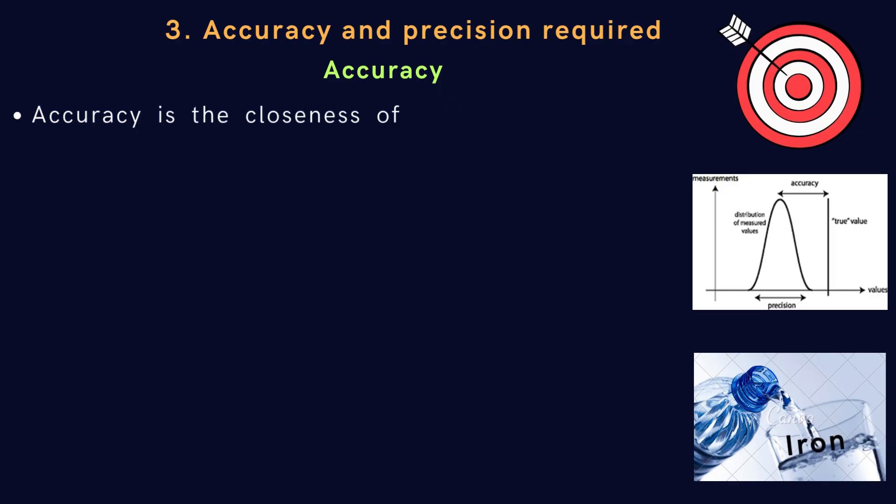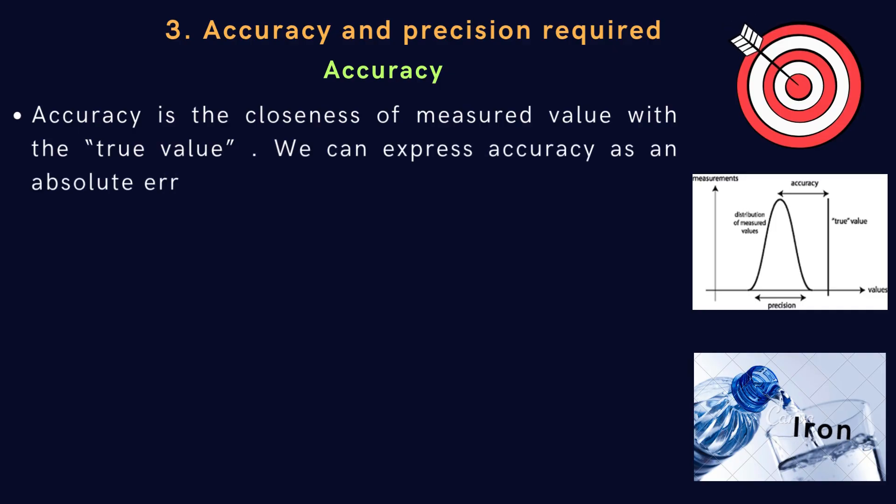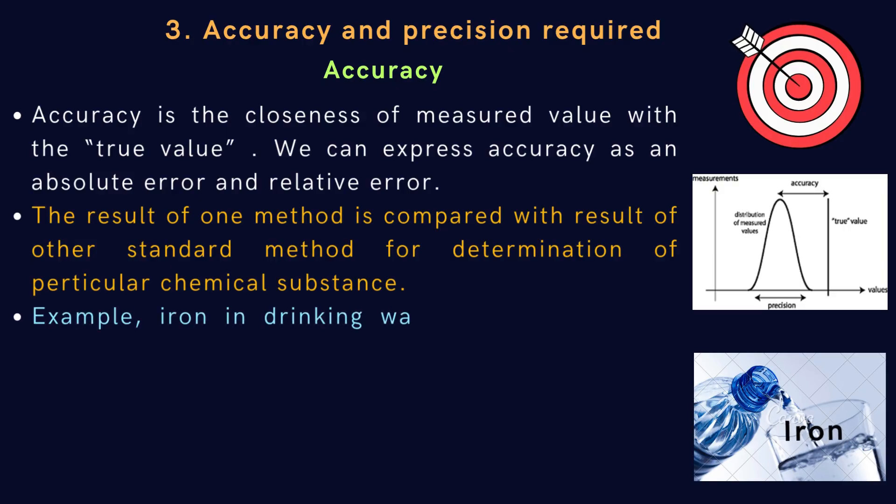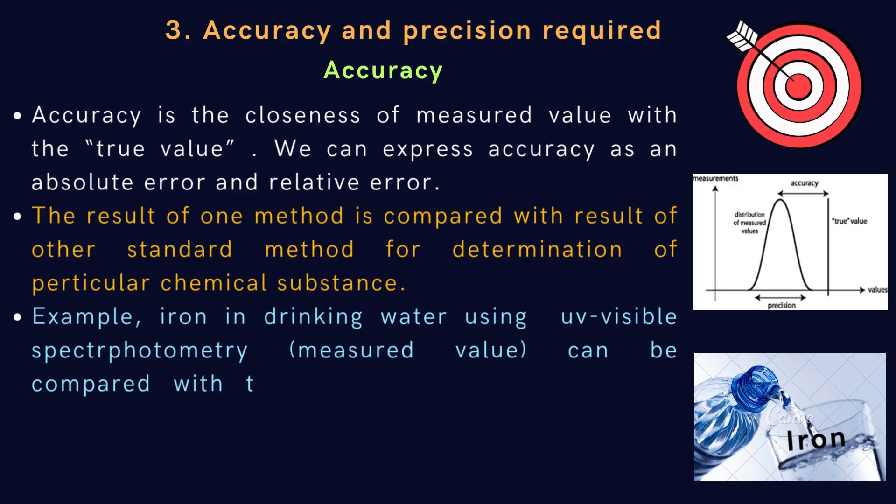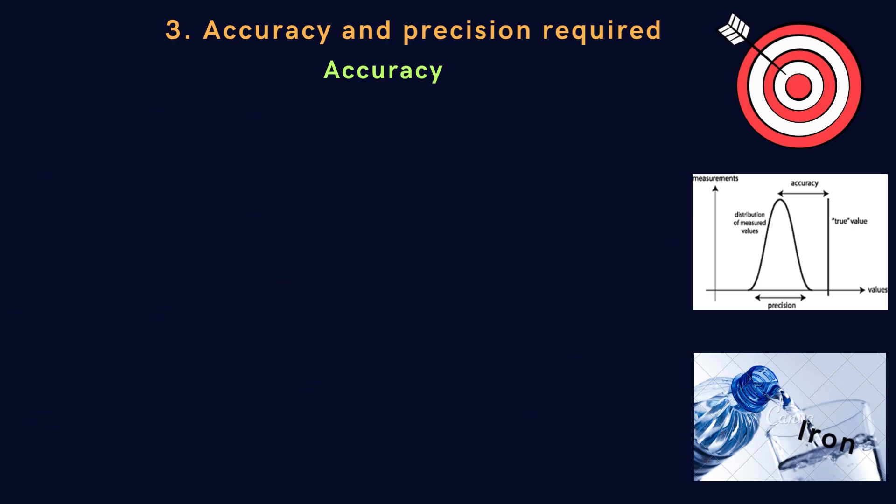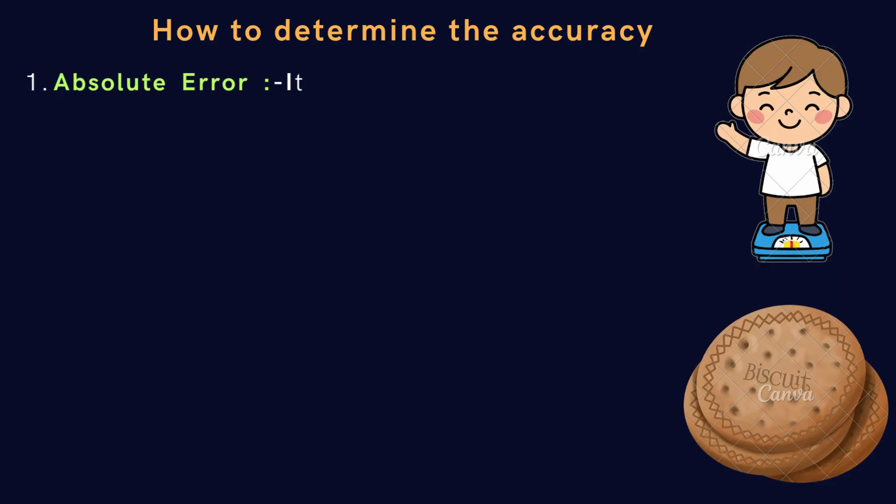Third one is accuracy and precision required, where accuracy is the closeness of measured value with the true value. We can express accuracy as an absolute error and relative error. The result of one method is compared with result of other standard method for determination of particular chemical substance. Example: iron in drinking water using UV-visible spectrophotometry, measured value, can be compared with the result of atomic absorption spectrometry, true value, and accuracy can be determined, how close the true value with measured value. Here, we know how to determine accuracy in analytical measurements. There are two main ways to check accuracy: absolute error and relative error.